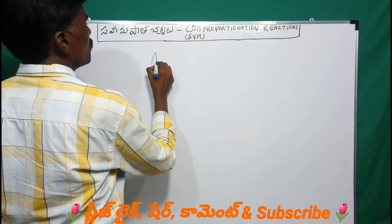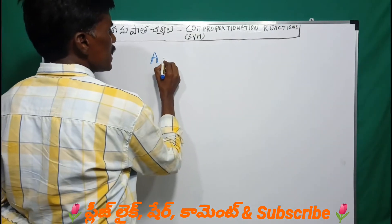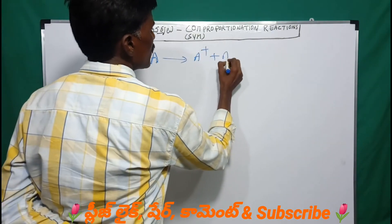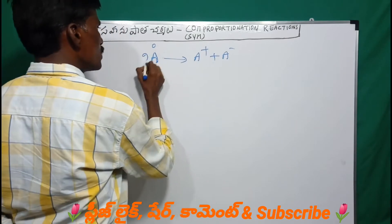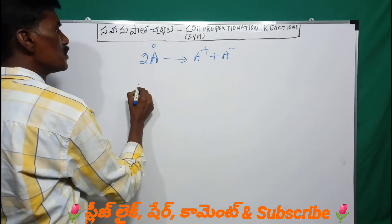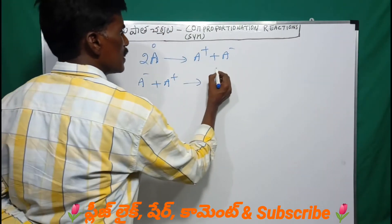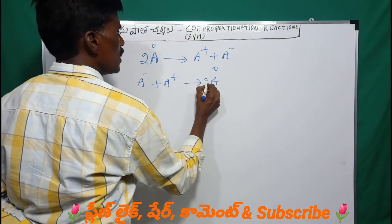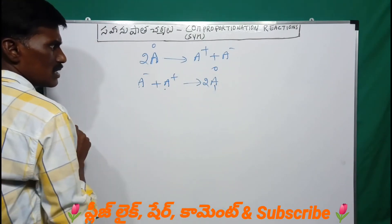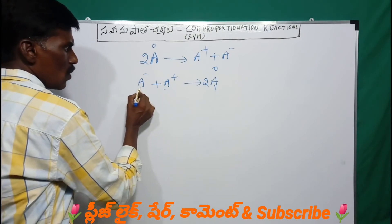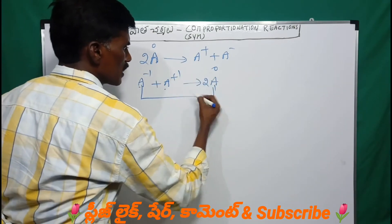For example, in a comproportionation reaction: A-plus and A-minus combine to form A0. So A is in the 0 oxidation state — the charge balances to give 2A. Here A is 0 in the oxidation state. The product side has one oxidation state, while the reactant side has two oxidation states — one is minus 1 and one is plus 1.